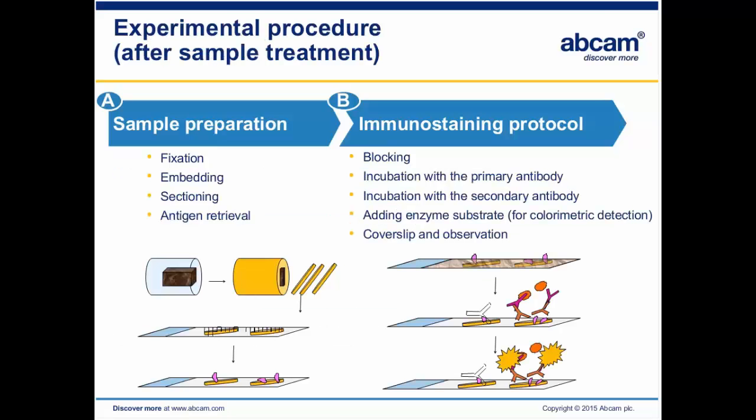Sample preparation refers to the fixation of the tissue, the embedding of the tissue, sectioning, and then antigen retrieval. From there, no matter what your sample is, the immunostaining protocol is pretty similar: you use your blocking solution, incubate your primary, incubate with your secondary, add the enzyme substrate if you're doing colorimetric detection, and then finally cover-slip and observe.